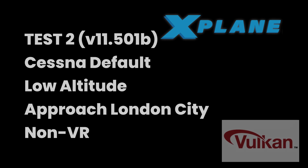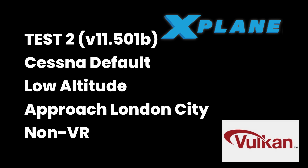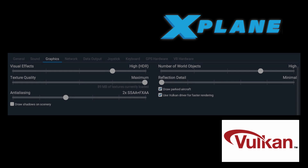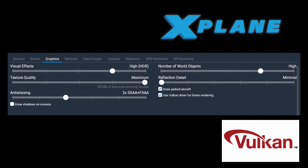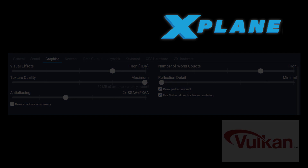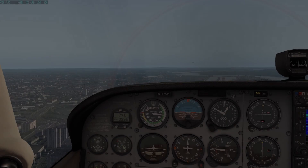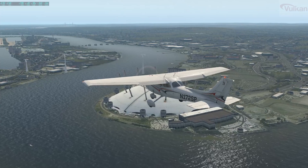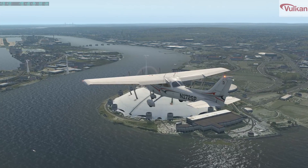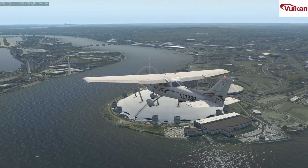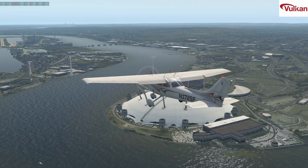Let's switch now to exactly the same flight and same weather conditions but using the Vulkan version 11.50. The texture quality slider has changed slightly so it's pushed up to maximum so we get a like-for-like comparison.